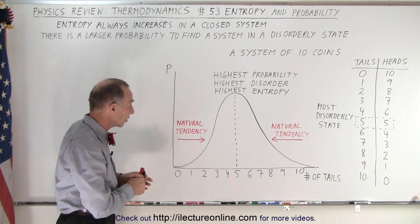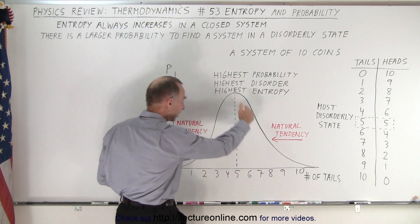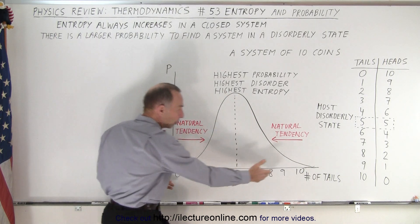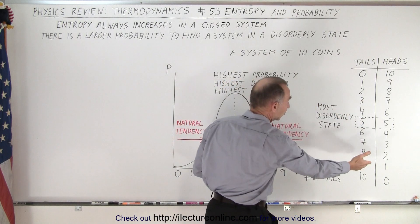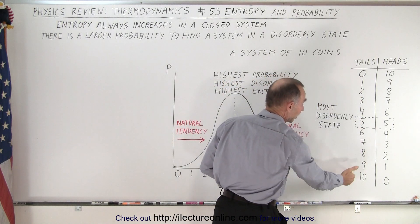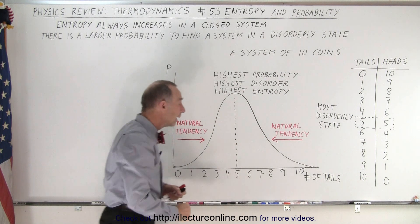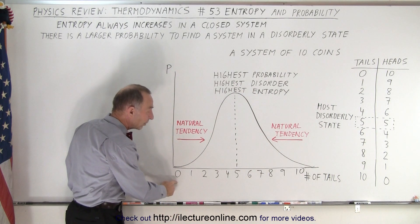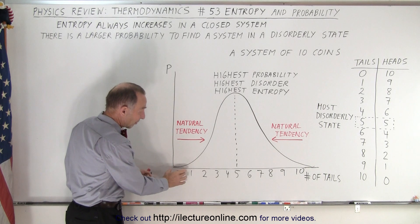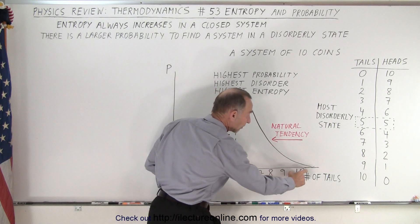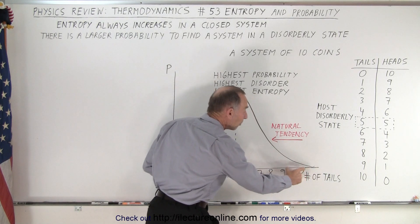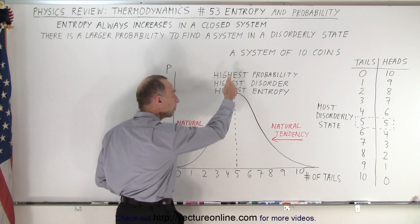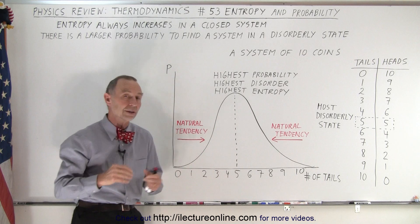We have a graph that shows on the bottom the number of tails and here we have the combination. We have 0 tails and 10 heads, or 10 tails and 0 heads, and so forth. Notice that the probability of having 0 tails and therefore 10 heads is not very big, as well as when you have 10 tails and 0 heads. But it's much more likely to have 5 heads and 5 tails, so the probability of that situation is much higher.